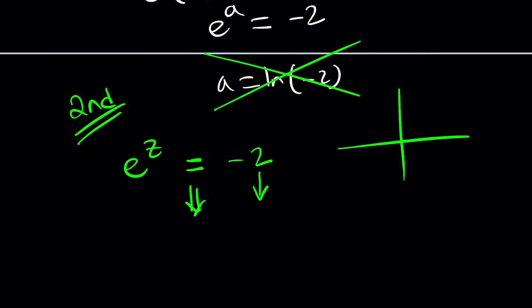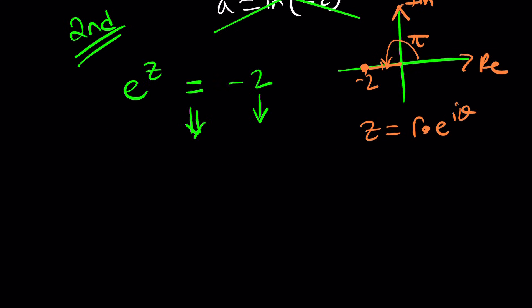How do you represent negative 2 on the complex Argand plane? Well, it's a real number, so it's going to be on the real axis, two units away from zero to the left, so that its modulus is going to be two units. And then, of course, it makes an angle of pi radians, that's where the pi comes from, with the positive real axis. So we can write any complex number as r times e to the i theta, where r is the modulus, which is true in this case. So negative 2 can be written as 2 times e to the power i pi. Beautiful.